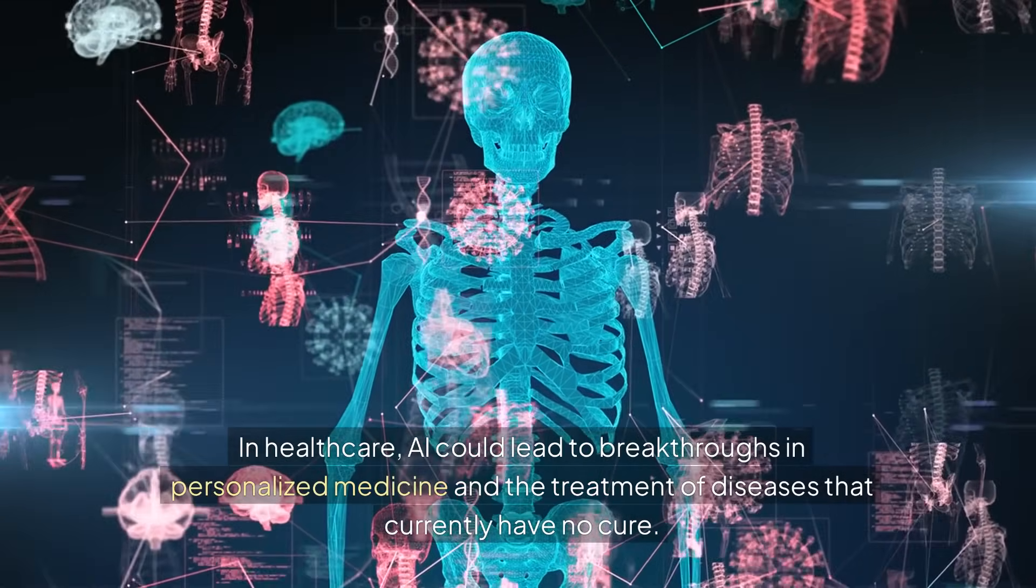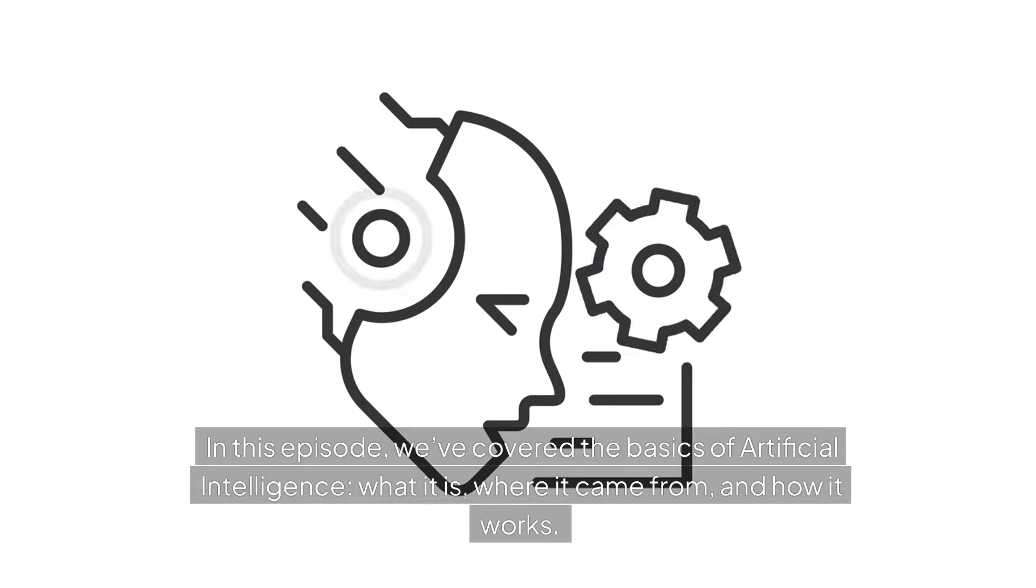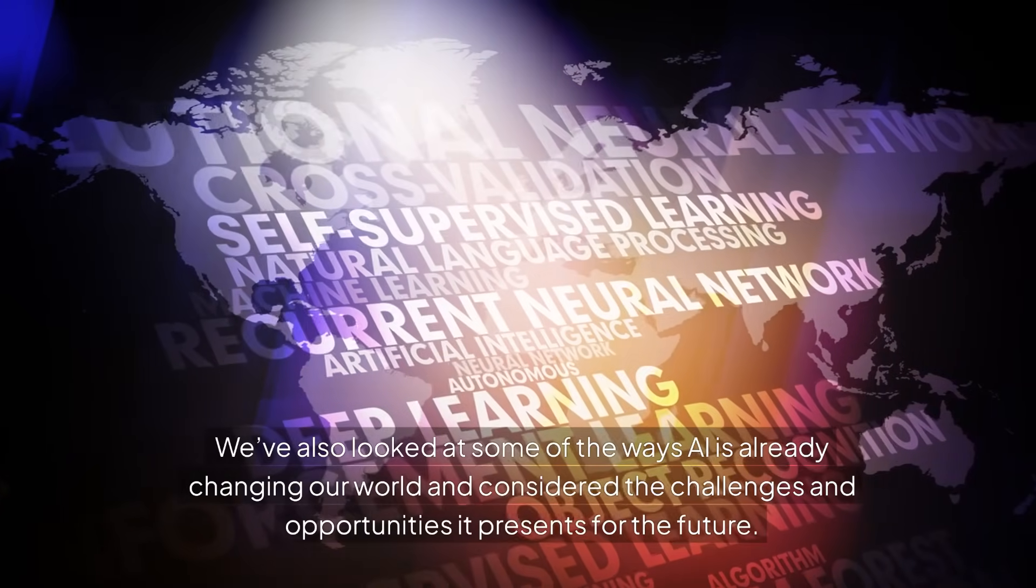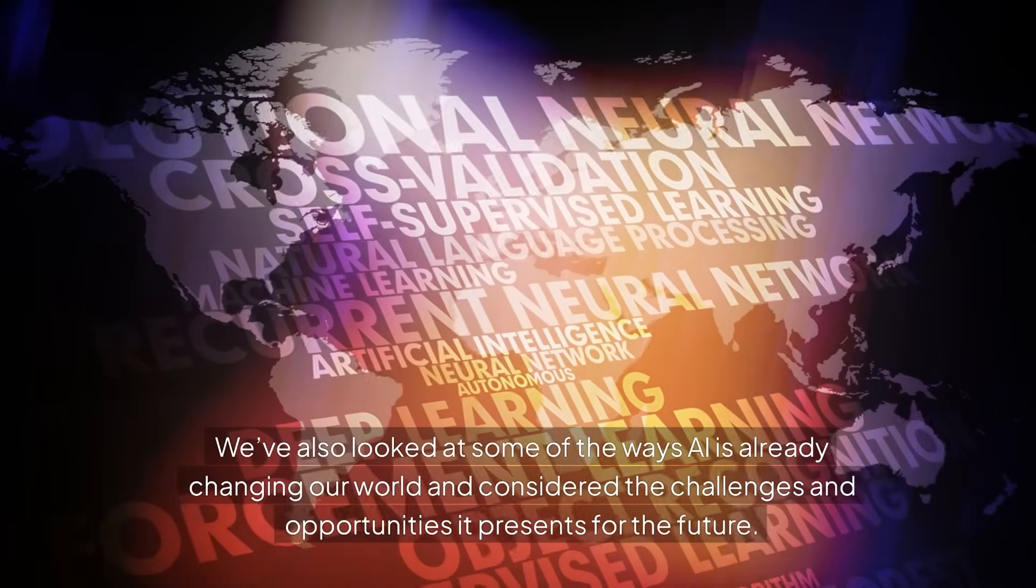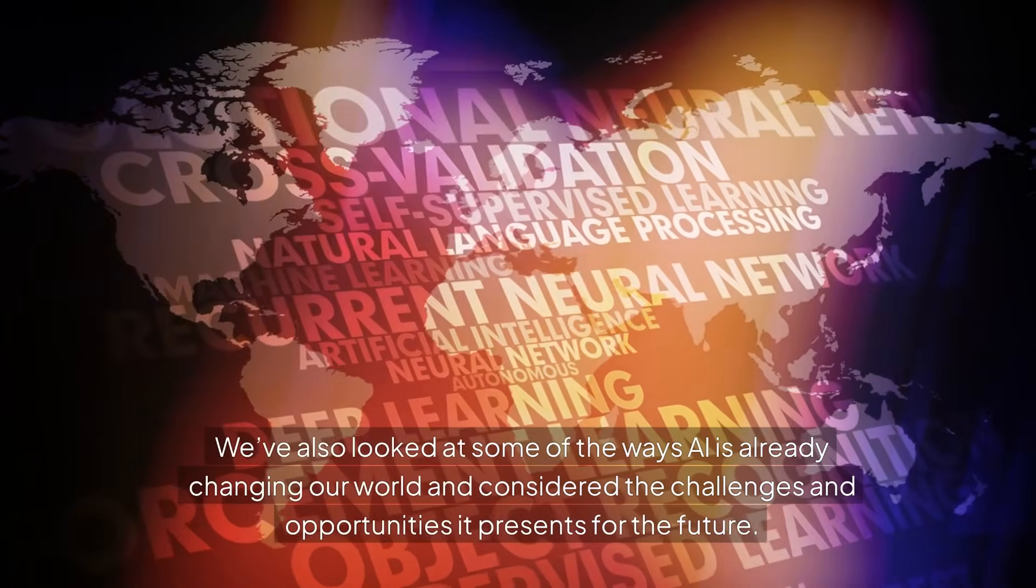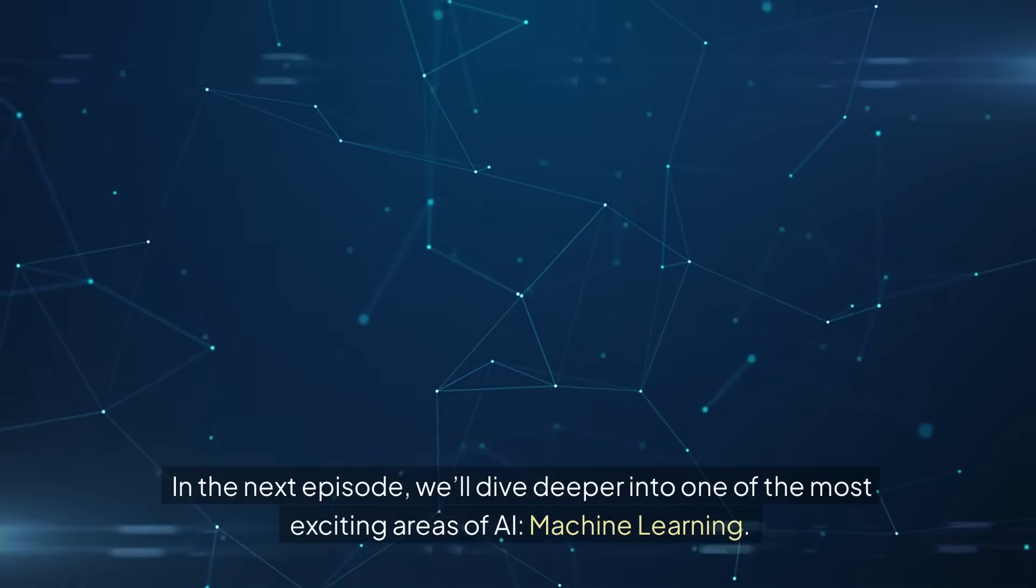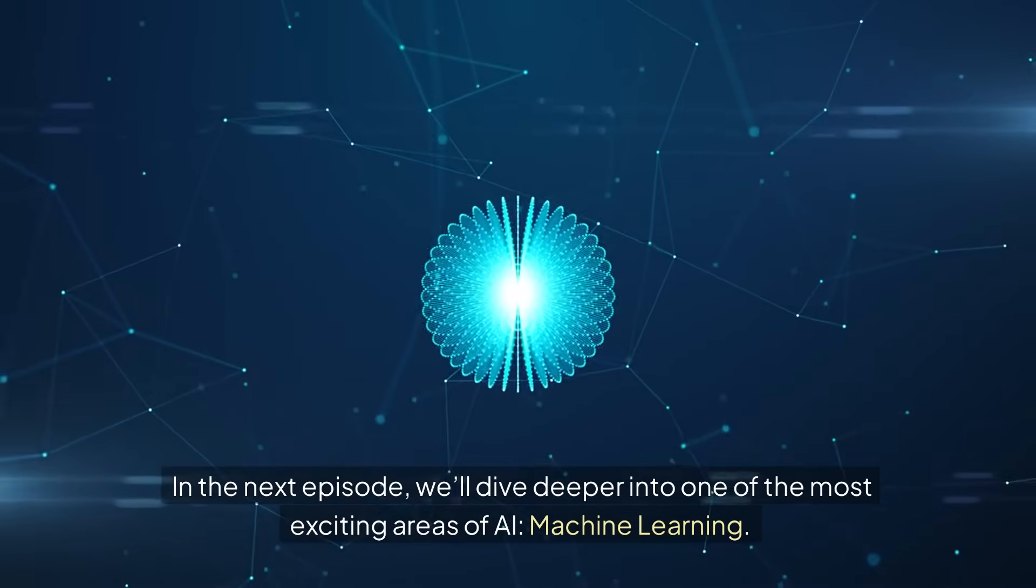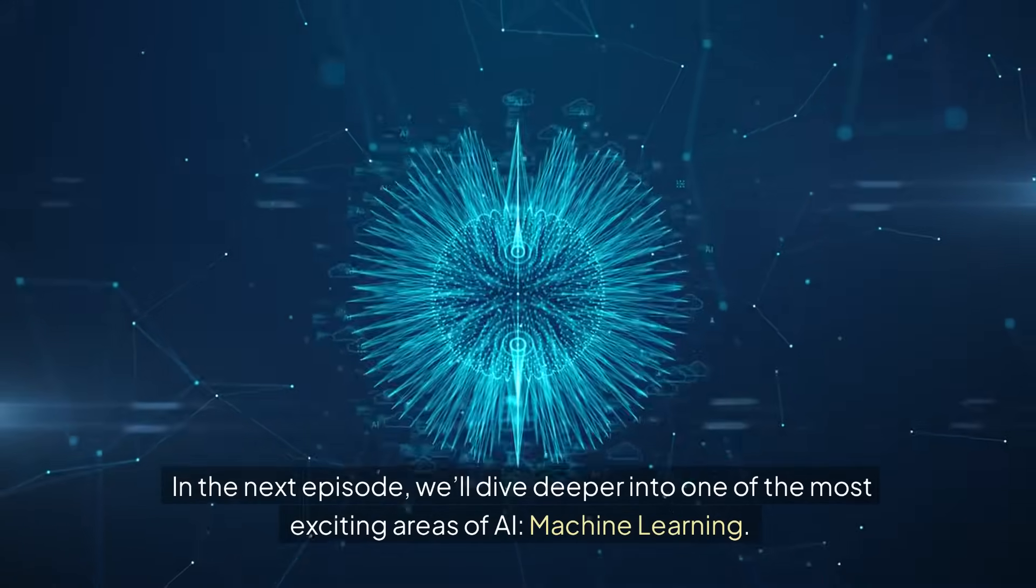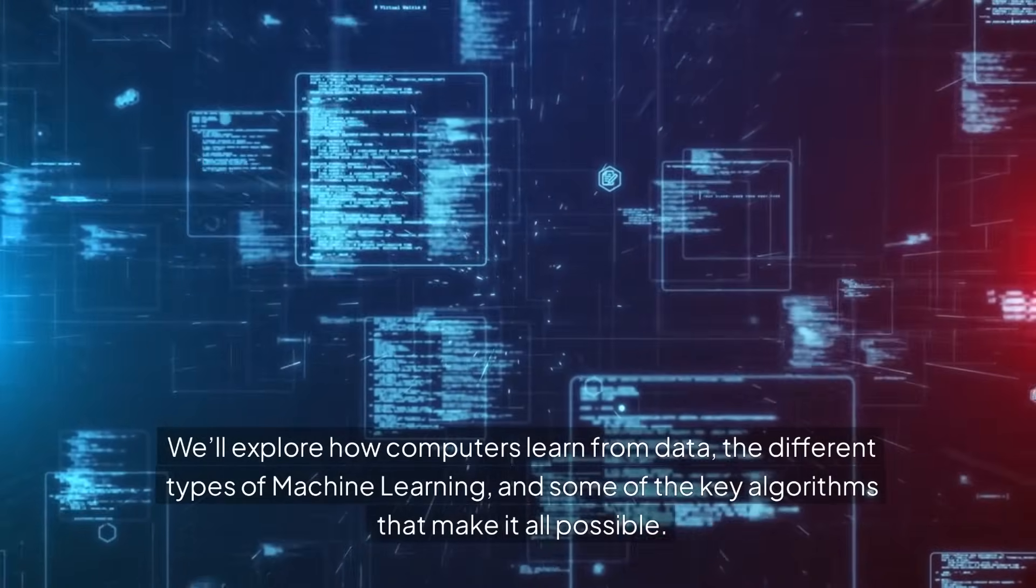Conclusion: in this episode we've covered the basics of artificial intelligence, what it is, where it came from, and how it works. We've also looked at some of the ways AI is already changing our world and considered the challenges and opportunities it presents for the future. In the next episode we'll dive deeper into one of the most exciting areas of AI: machine learning. We'll explore how computers learn from data, the different types of machine learning, and some of the key algorithms that make it all possible.